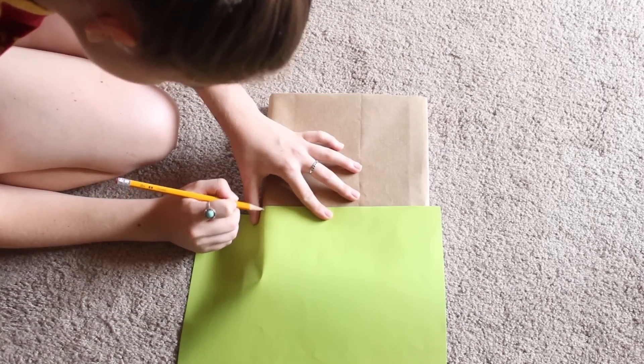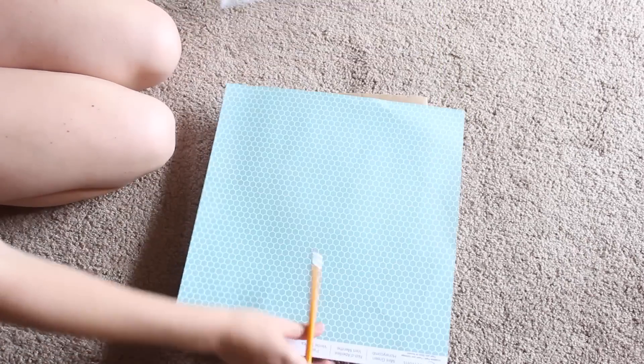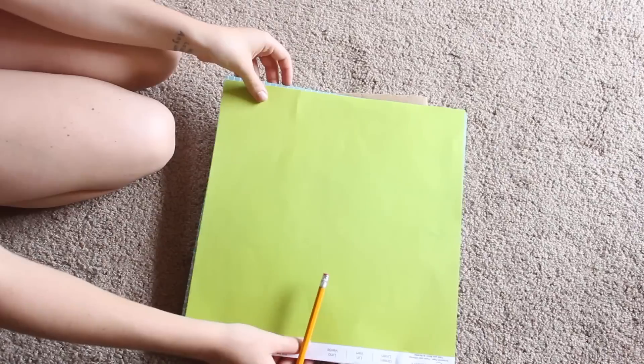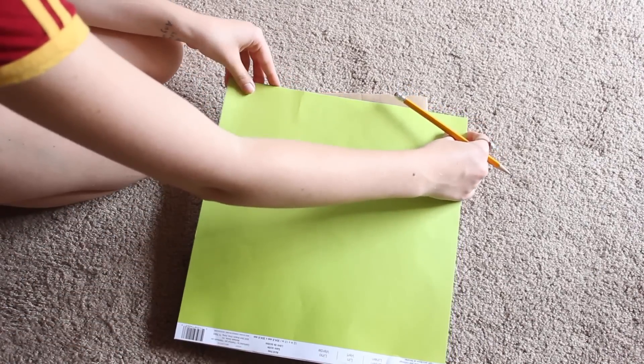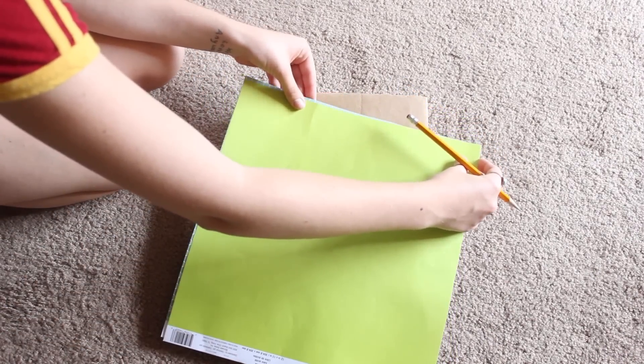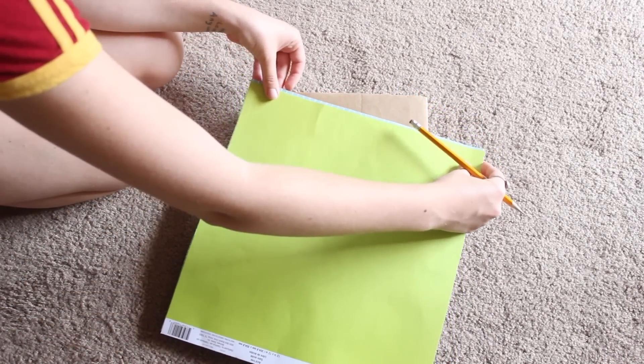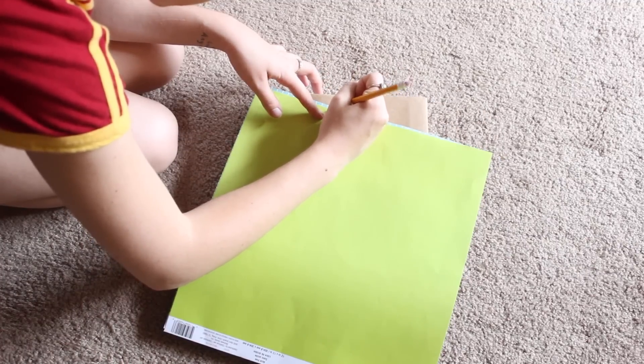And you're just going to line it up and make sure there's a little bit of extra space on both sides of the textbook for the paper so that you can fold it over. And then you're going to make that same marking on the second piece of paper. That way you can make sure that your pockets are going to be the same size.